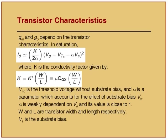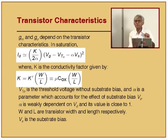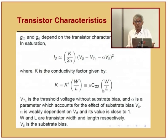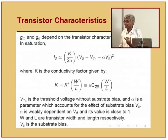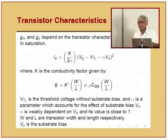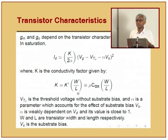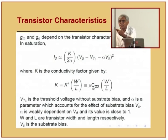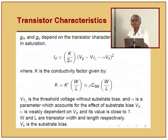Wherever possible in this discussion, I will try to separate out these factors and see the dependence on all three of them separately, so you know what is in the hands of the designer and what is not. This k I would like to break up: mu*Cox is not in my hands - that is the mobility of electrons - but W/L is in my control. So I write the conductance factor k as k-prime times W/L, where k-prime equals mu*Cox.